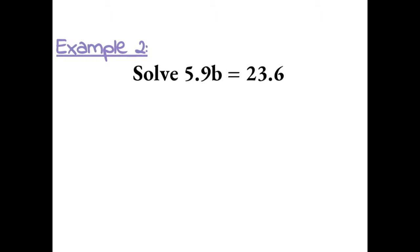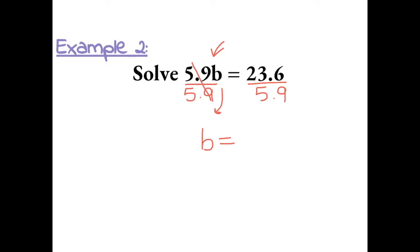Example 2: solve 5.9b equals 23.6. Since 5.9 is being multiplied with b, we have to do the inverse operation, which is to divide. We can show division with a fraction bar. So we divide both sides by 5.9. Then 5.9 over 5.9 cancels out, leaving b equals 23.6 divided by 5.9.